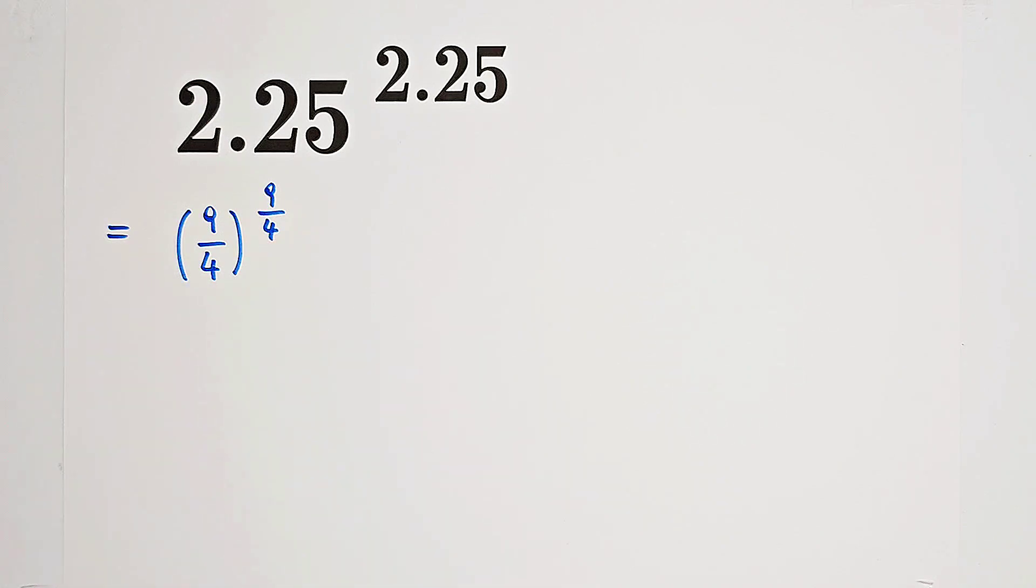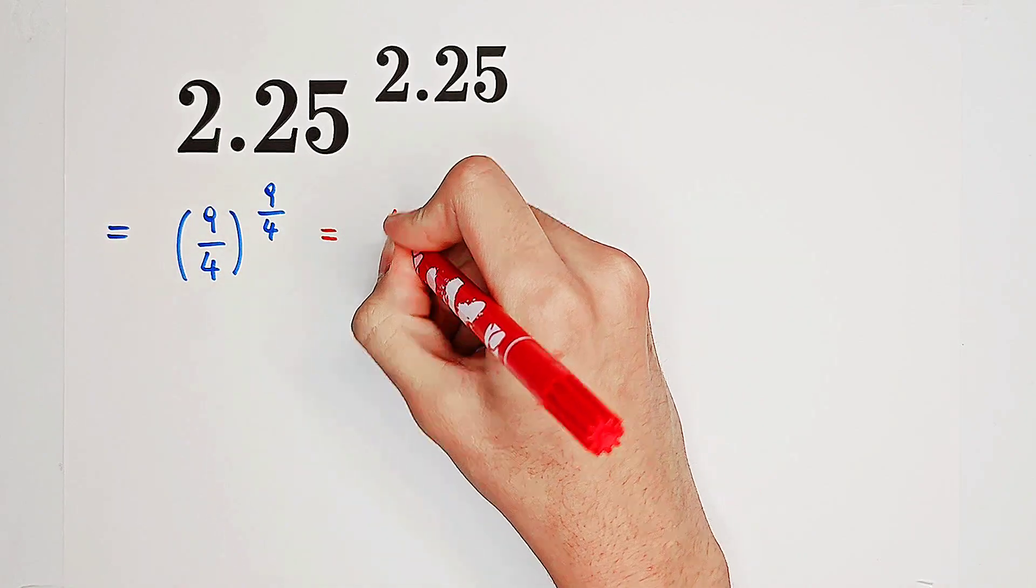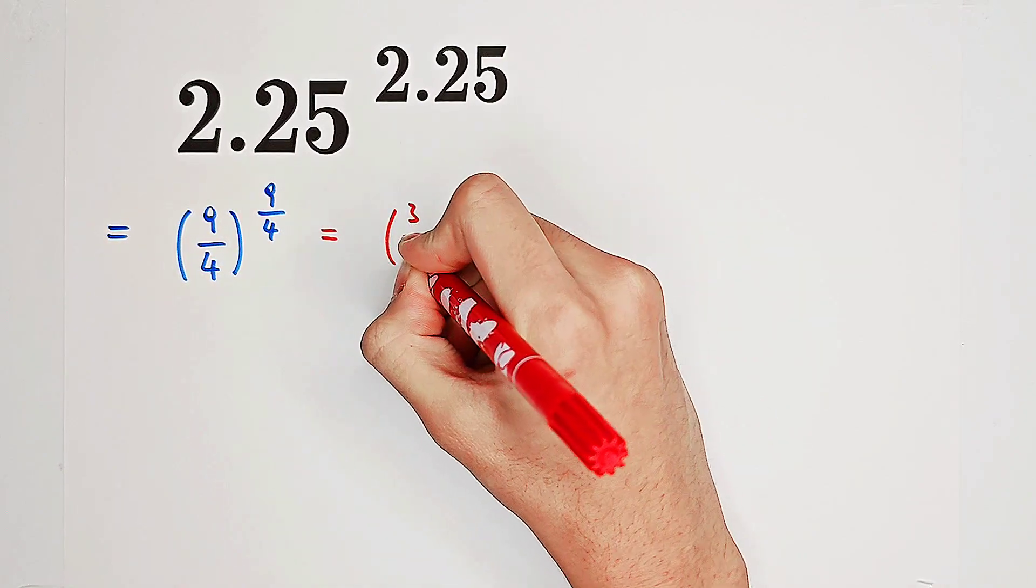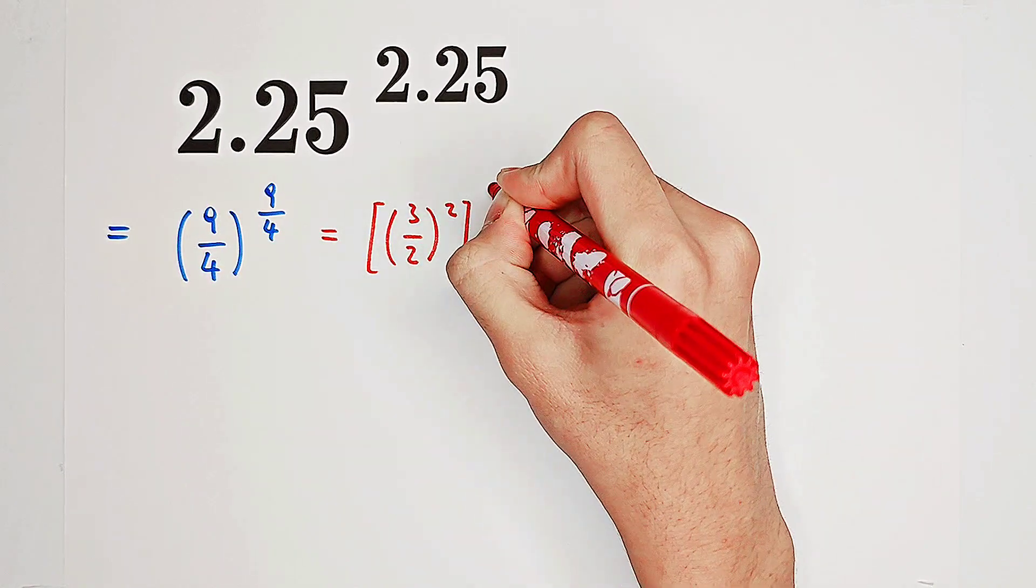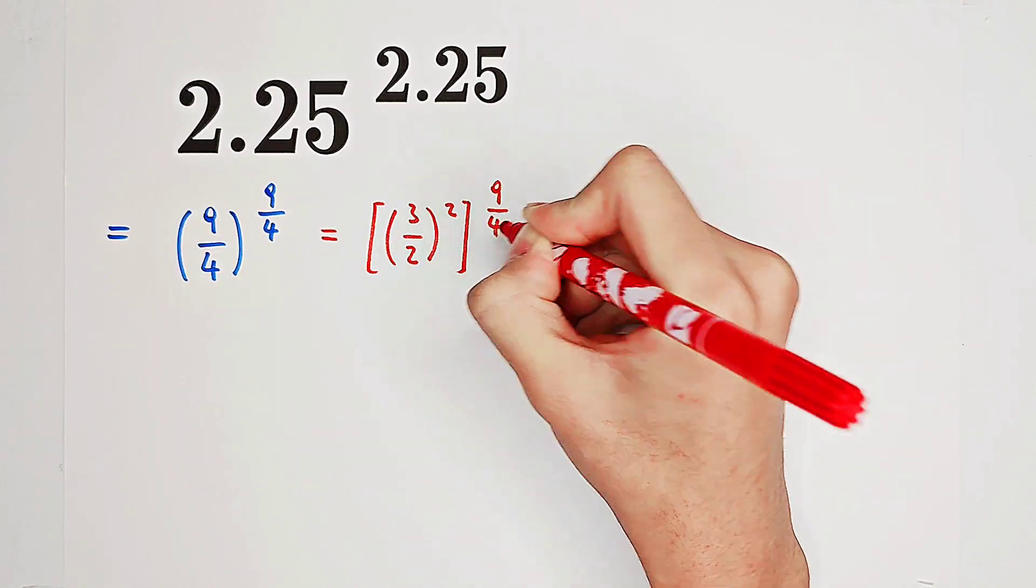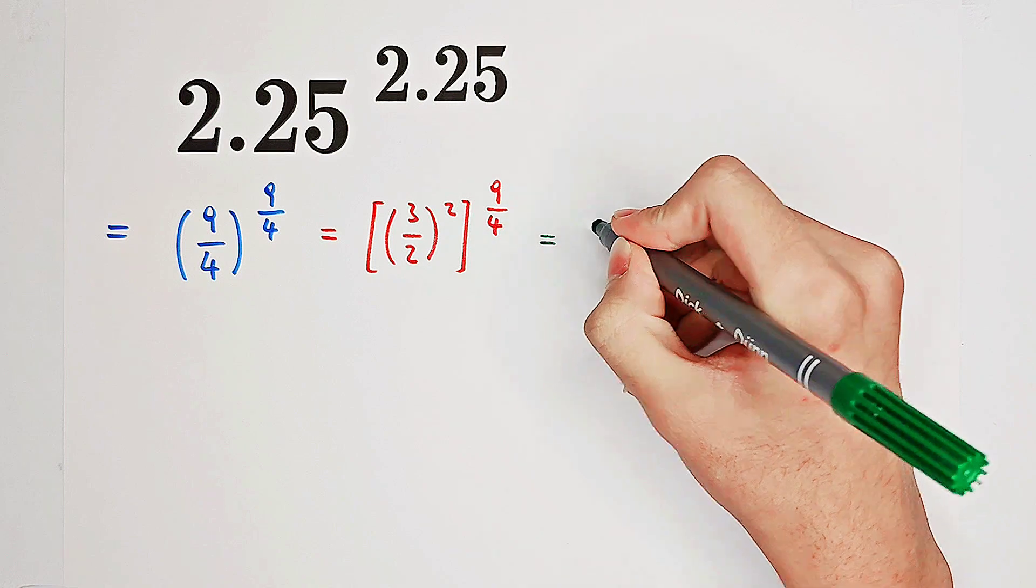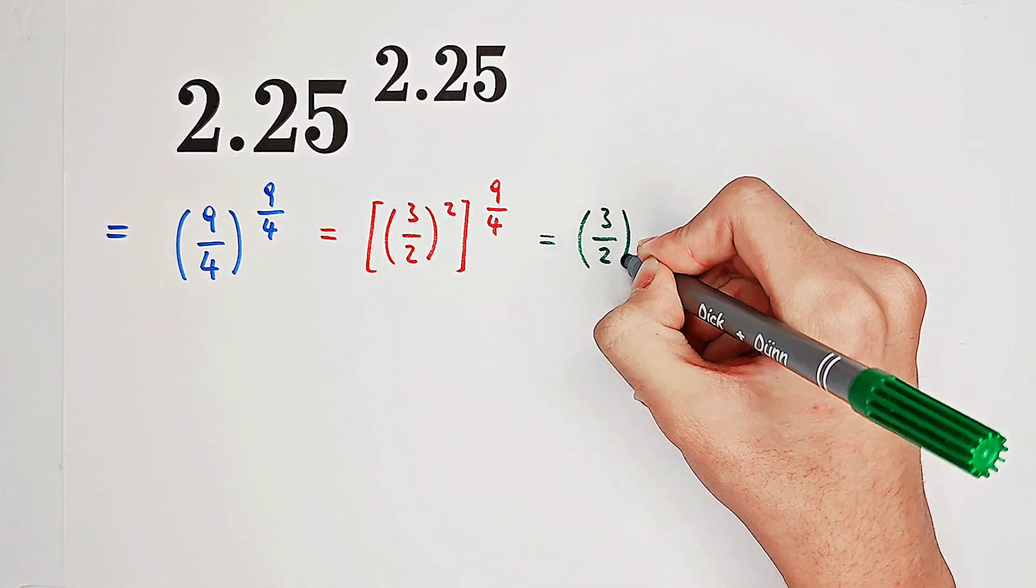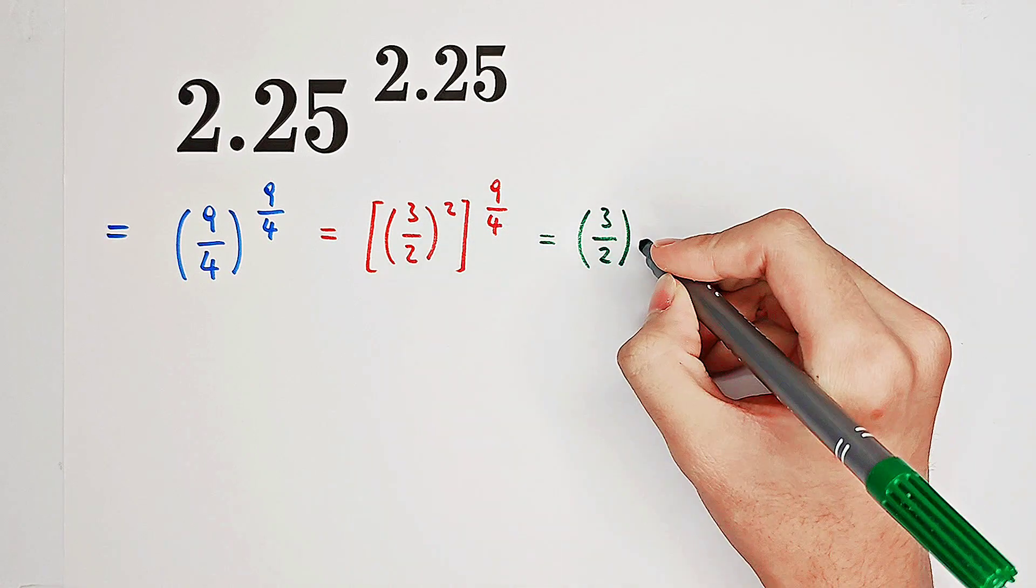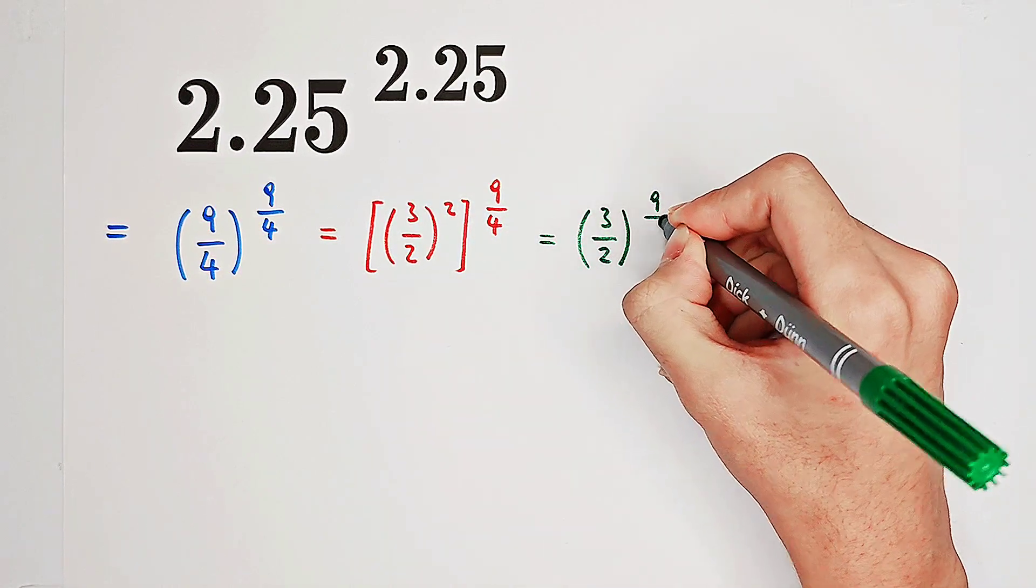So we can write 9 fourths as 3 over 2 all squared, and then to the power of 9 over 4. So, very good. And then what I'm going to do is to multiply this 2 and 9 over 4 together. So it's going to be 3 over 2 to the power of 9 over 2.